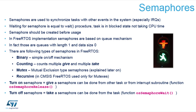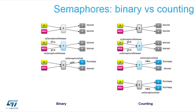When you define a semaphore, it starts with an empty parking lot — there is nothing. To be able to take the car from the parking lot, somebody else has to give you the semaphore — has to place the car into the parking lot. The binary semaphore is a simple flip-flop telling you whether there is an item and you can take it. You are blocked if the car is not in the parking lot.